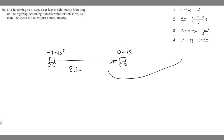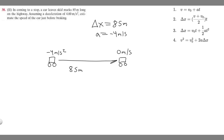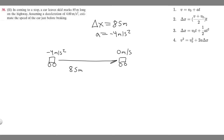Now let's identify each variable and use the kinematic equations to solve. We know delta x — the change in position, or distance traveled — is 85 meters. Acceleration is negative four meters per second squared. And our final velocity is zero meters per second, since the car comes to a complete stop.